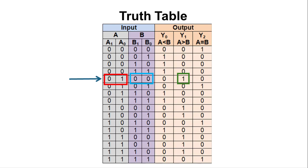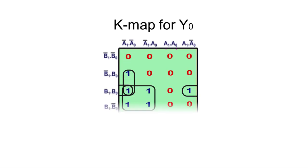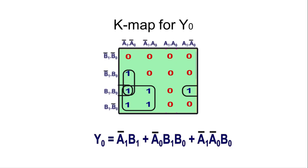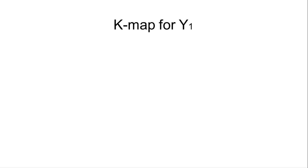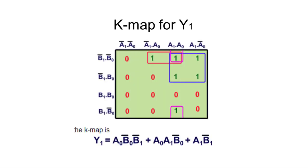The K-map for y0 has two pairs and a quad. The equation for the quad is a1-bar·b1, and the equations for the two pairs are a0-bar·b1·b0 and a1-bar·a0-bar·b0. For y1, the K-map also contains two pairs and one quad.